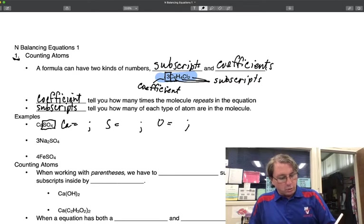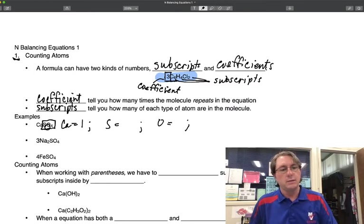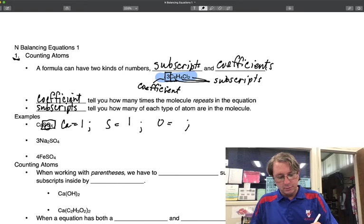Since there's no subscript on the calcium, there's one calcium. Same with sulfur, there's no subscript. If sulfur had an individual subscript, it would be right here, but it's not, so there's one. Oxygen has a subscript of four, so there are four oxygens.